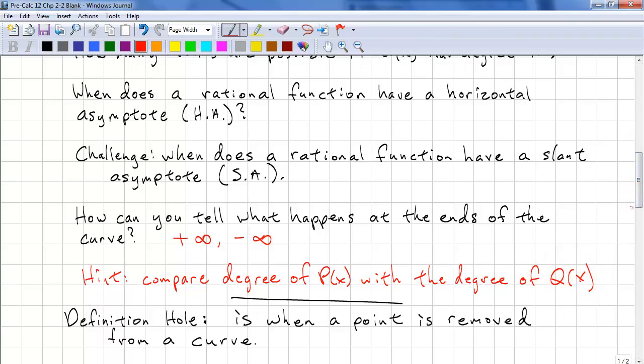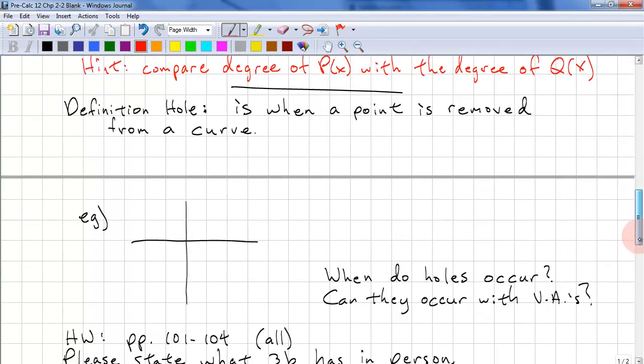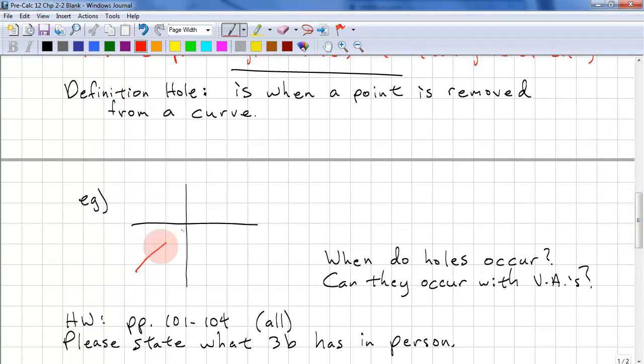Here's the definition of a hole. It's when a point is removed from a curve. So what does that look like? We have a curve, and we have a point removed, and the curve continues.